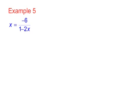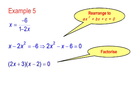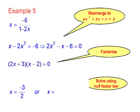And finally, here's a more complicated quadratic equation to solve. Here we're given x equals minus 6 over 1 minus 2x. So we have to do some rearranging first to turn it into ax² plus bx plus c equals 0. And that's what I've done in this second line. So we have 2x² minus x minus 6 equals 0, which needs to be factorised. And it does into 2x plus 3, x minus 2 equals 0. Using the null factor law, we arrive at x equals minus 3 over 2 or x equals 2. So those are our solutions.